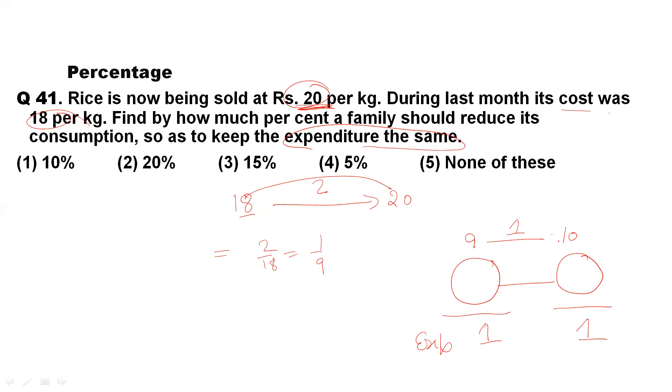We need to fill these circles so that this 10 cancels out and this 9 cancels out. We know that we have to put 10 here so this 10 cancels out. For 9 to cancel out, we put 9 here. So the decrement, what do we have to do? We have to decrement on 10.